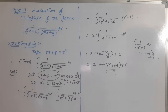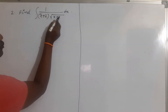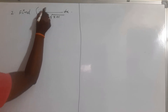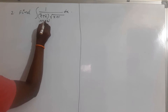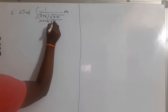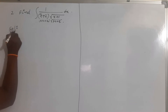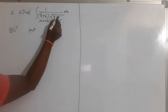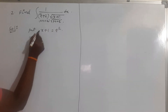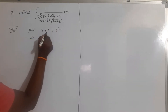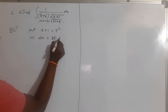See another example. Find the integration of 1 by (x + 2) into root over (x + 1). This is also in the form of integration of 1 by (ax + b) into root over (px + q). Simply put x + 1 = t squared, so derivative of x is dx, derivative of constant is 0, and derivative of t squared is 2t dt.